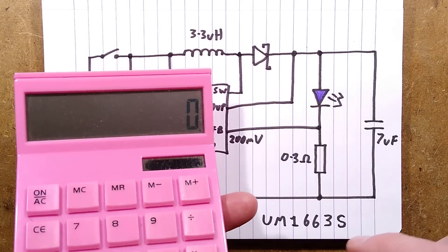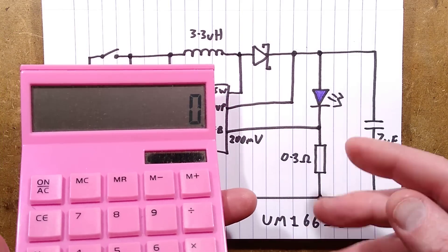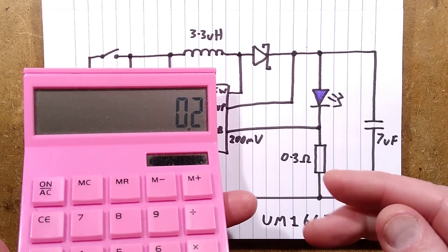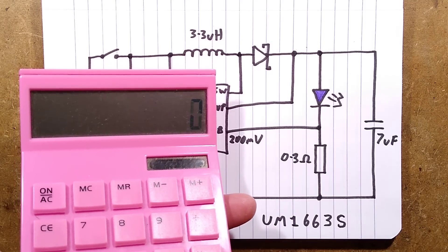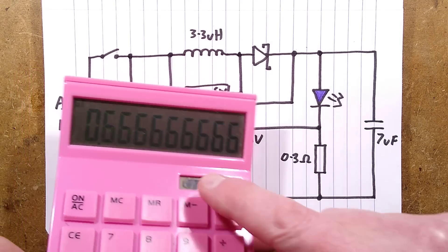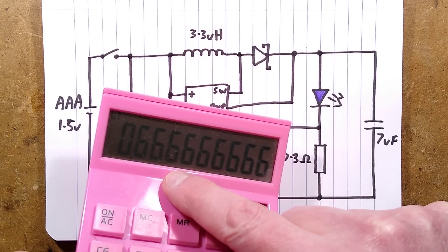0.2 is the sense voltage, 200 millivolts, divided by the resistance, 0.3 equals a current of 667 milliamps. I put 670 milliamps approximately through the LED.